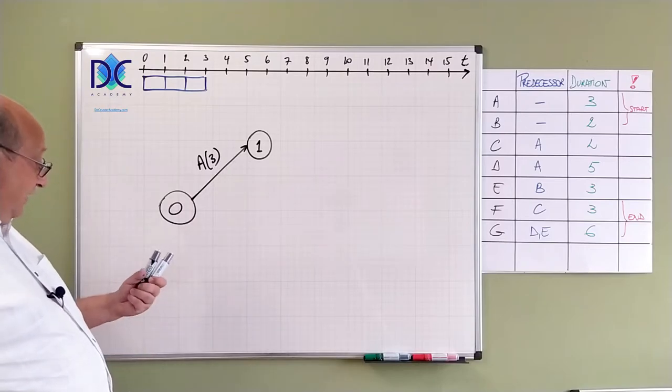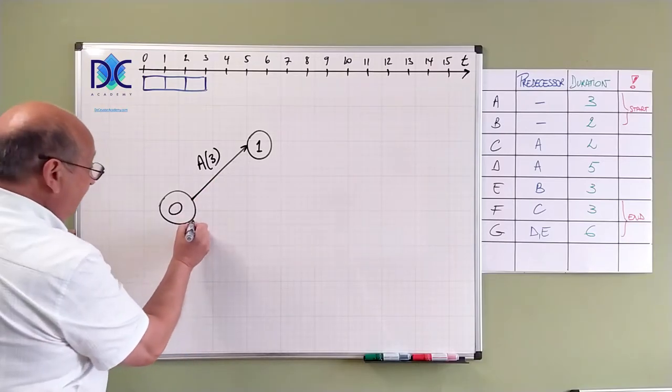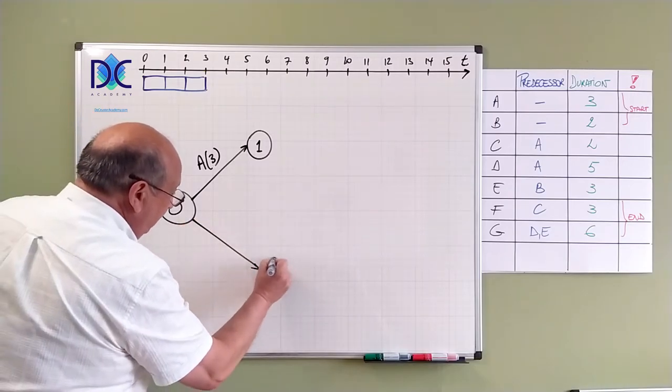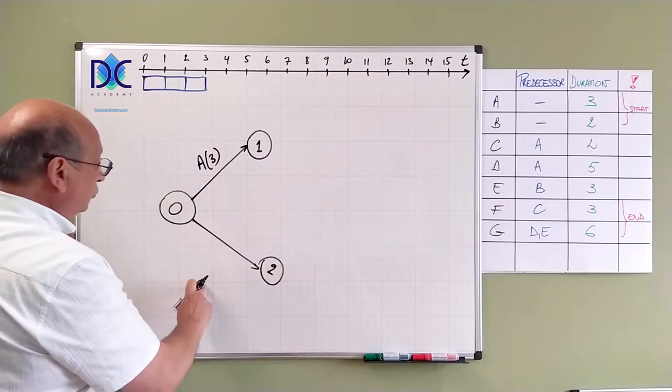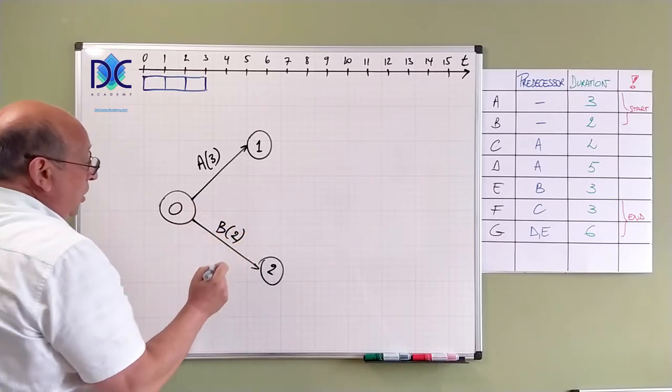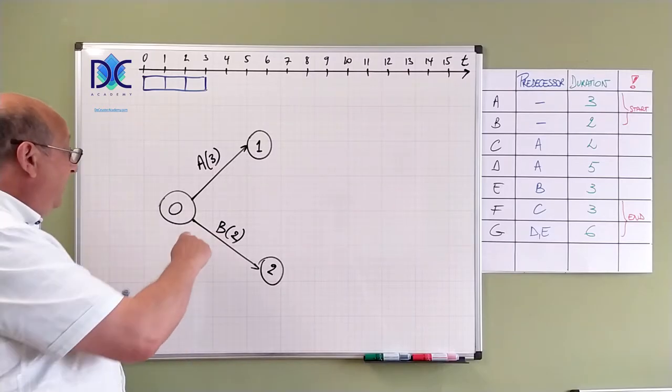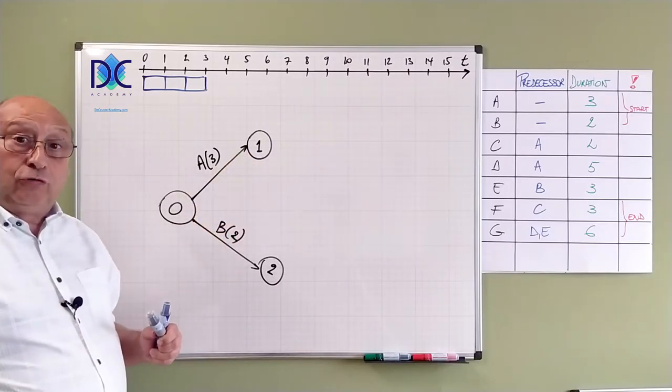Let's look at B. B, the same thing. We have another node, node two. We have B with a duration of two. So these are in fact those nodes. We can only have one arrow between two nodes.